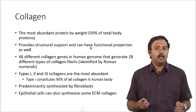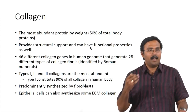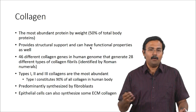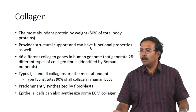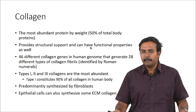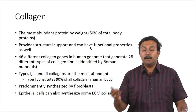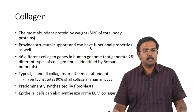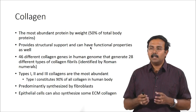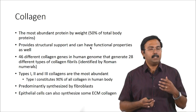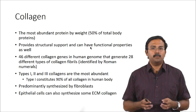Amongst the structural proteins, the common ones are collagen, elastin, and fibrillins. Among specialized proteins, the common ones are fibronectin and laminin. Collagen is the most abundant protein by weight in the body — a very common exam question where people incorrectly say hemoglobin. The most abundant protein in your body is collagen. It is the structural component providing support, and also has some functional properties.